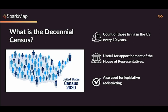To begin, let's talk about the Decennial Census. The Decennial Census is a count of the people living in the United States that happens every 10 years as mandated by the Constitution of the United States. The Census is not only important because it provides population and housing information, but it is also used for apportionment.